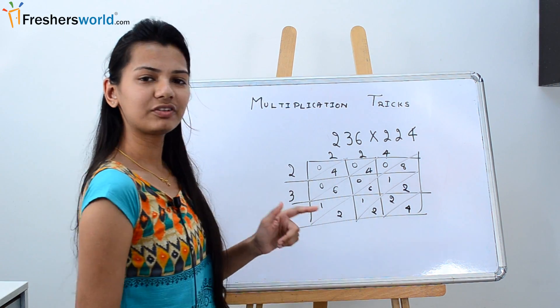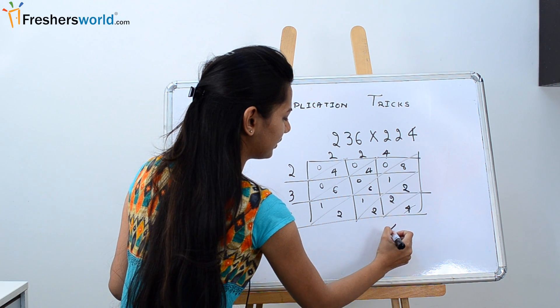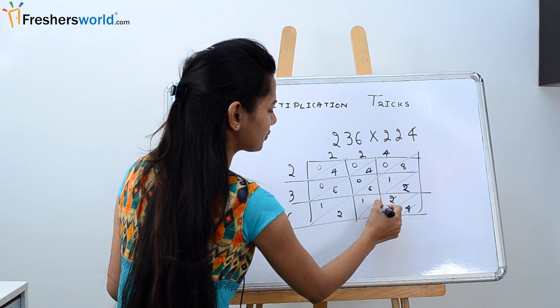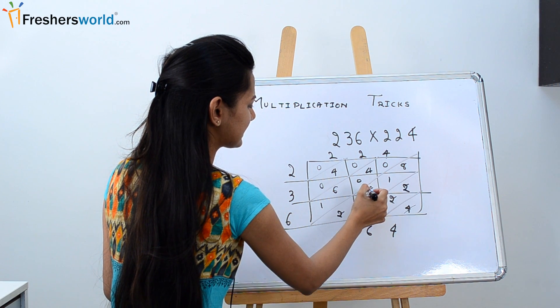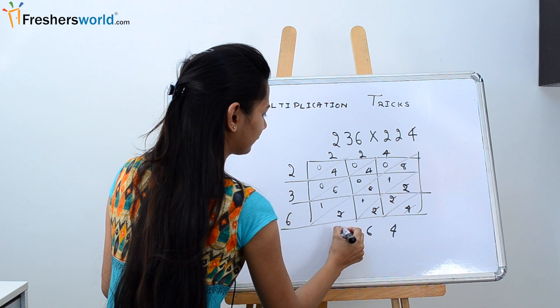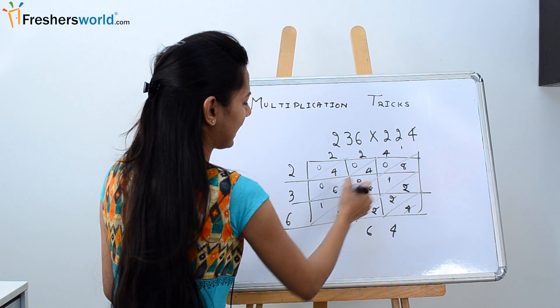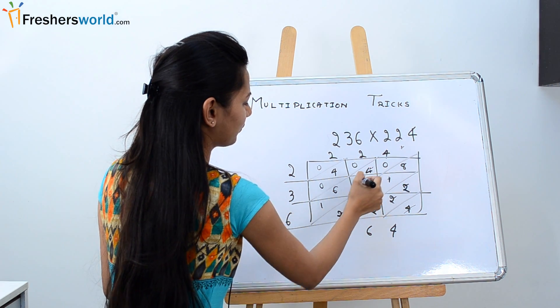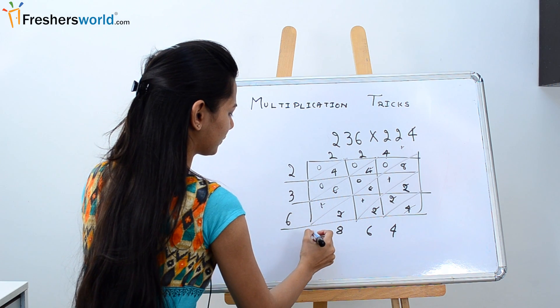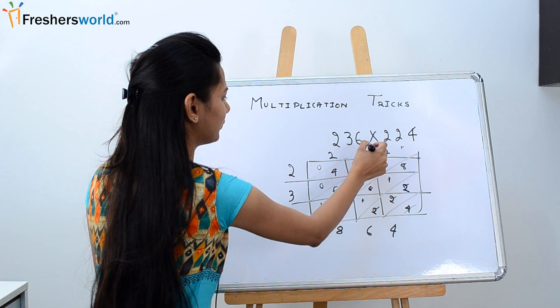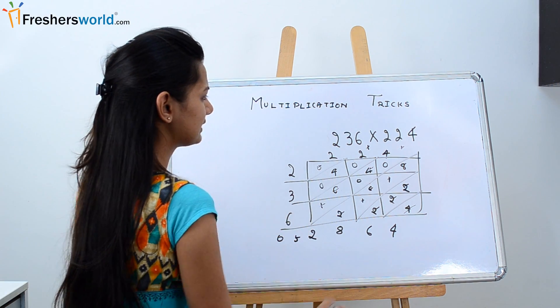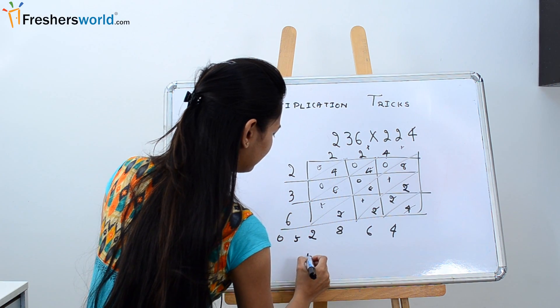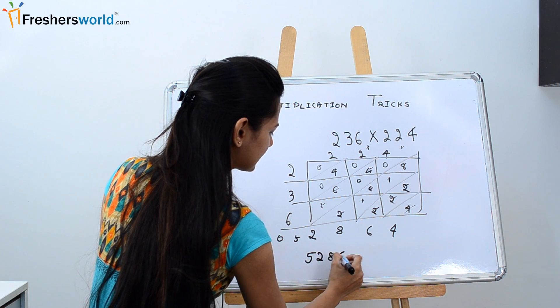After I have done this, I'm going to add. So this would be 4. This would be 2 plus 2 plus 2, 6. This would be 8 plus 2, 10, 16, 17, 18, and 1 carry. Then add this side: 4 plus 1, 5 plus 6, 11 plus 1, 12. So 2 and 1 carry. Then it would be 4 plus 1, 5, and this is a 0. The answer for this would be 52864.